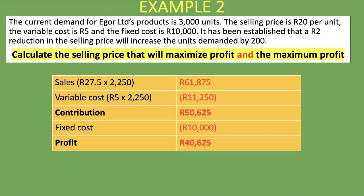The optimal selling price gives us the price that yields the highest level of profit. For example, reducing the price by 2 rand would increase units demanded by 200, but the resulting profit would be lower. I hope this lesson has made sense and added value. Please subscribe to our channel, like this video, and share it with those who might find it helpful.